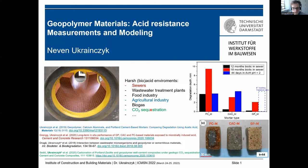These infrastructure materials are made mainly of concrete. Conventional materials are Portland cement-based; an alternative conventional option is calcium aluminate-based. The new trend is now to develop geopolymer materials, and this is what we have been working on for seven years here in Darmstadt.